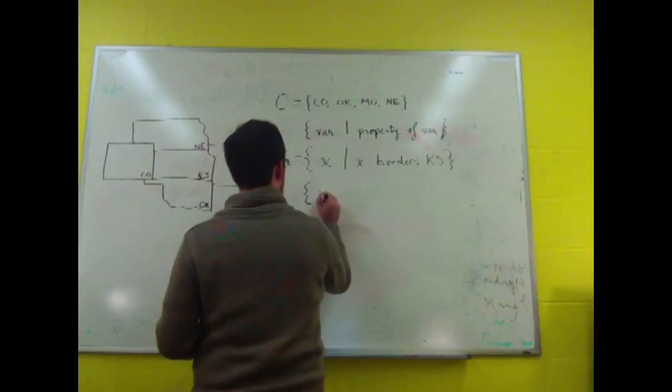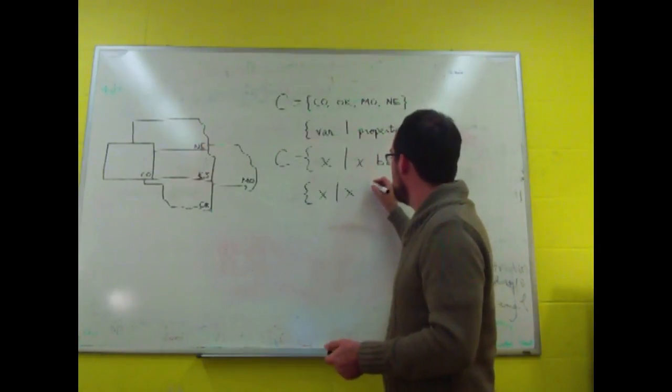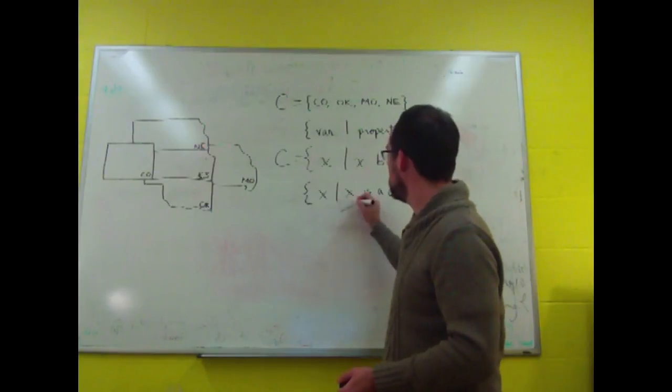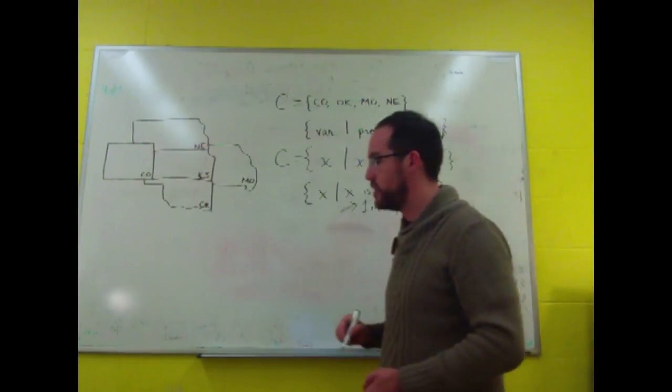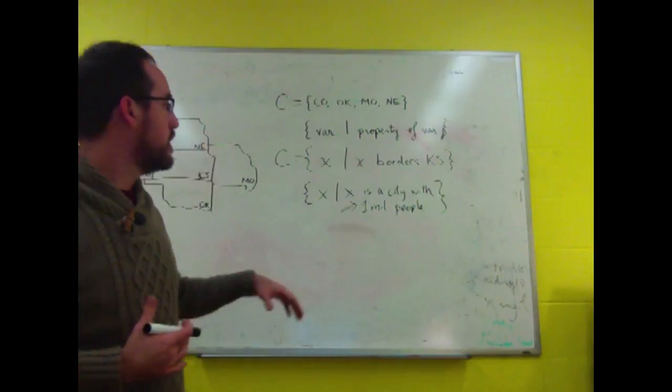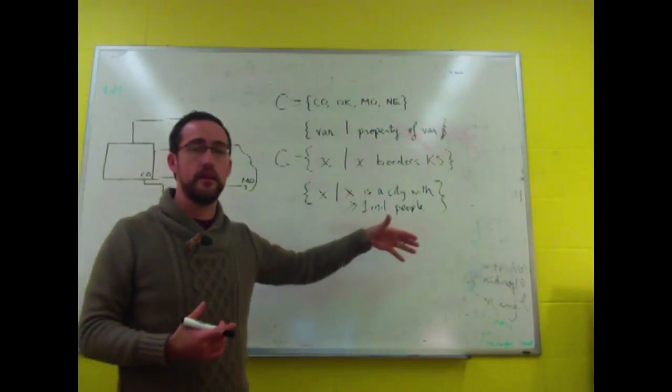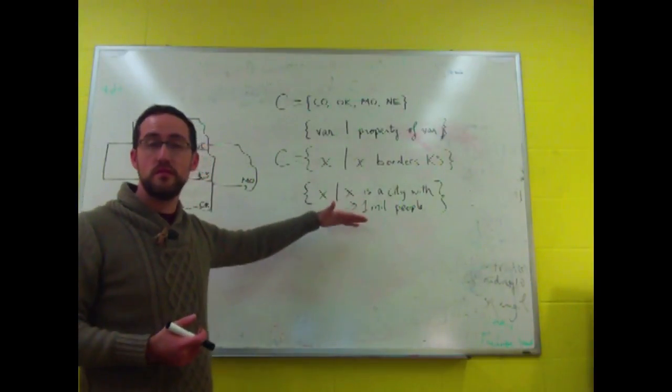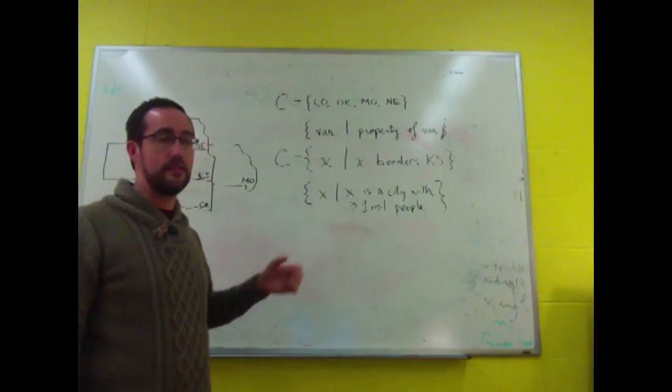For instance, take the set of individuals x such that x is a city with over a million people in it. What is the membership of this set? It's going to be a large set, but it's going to include places like New York, and London, and Beijing, and Singapore, and so forth. It's going to be a huge set. We don't know all of them. But whatever that membership is, there is a set to it.